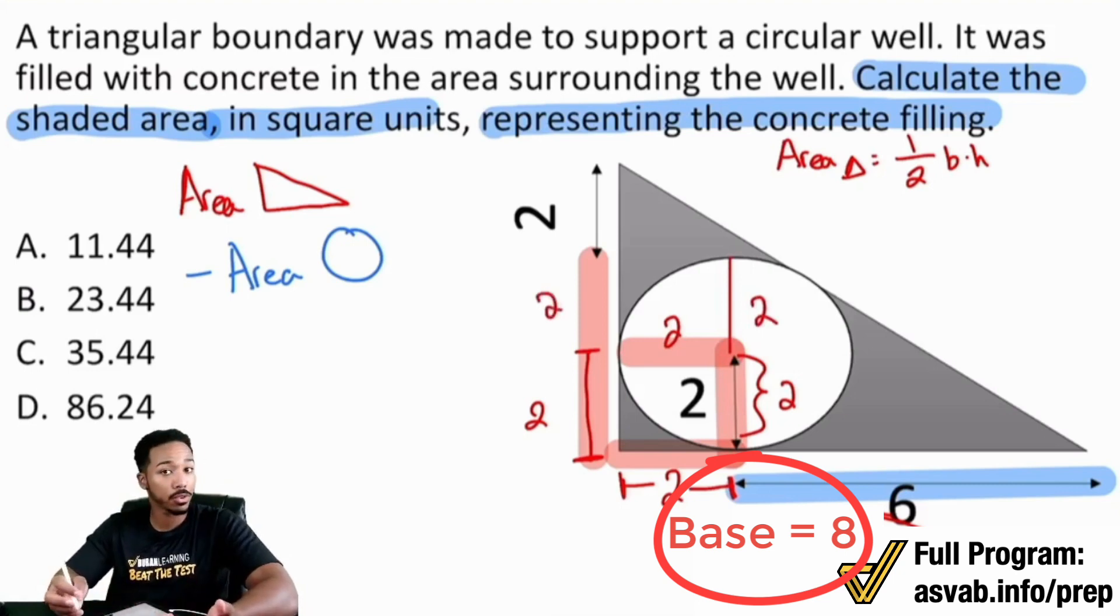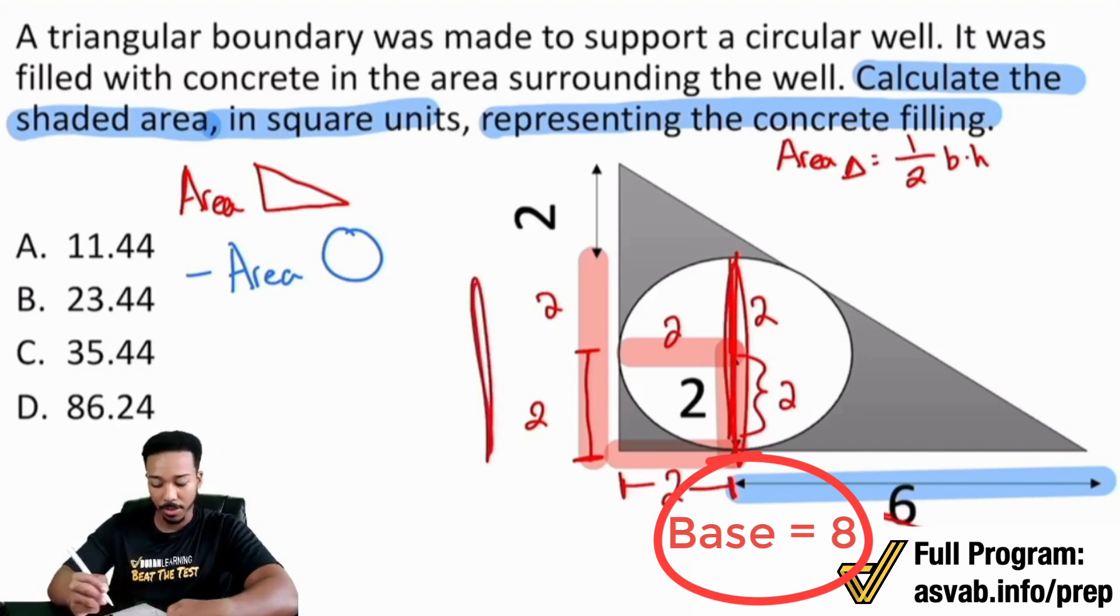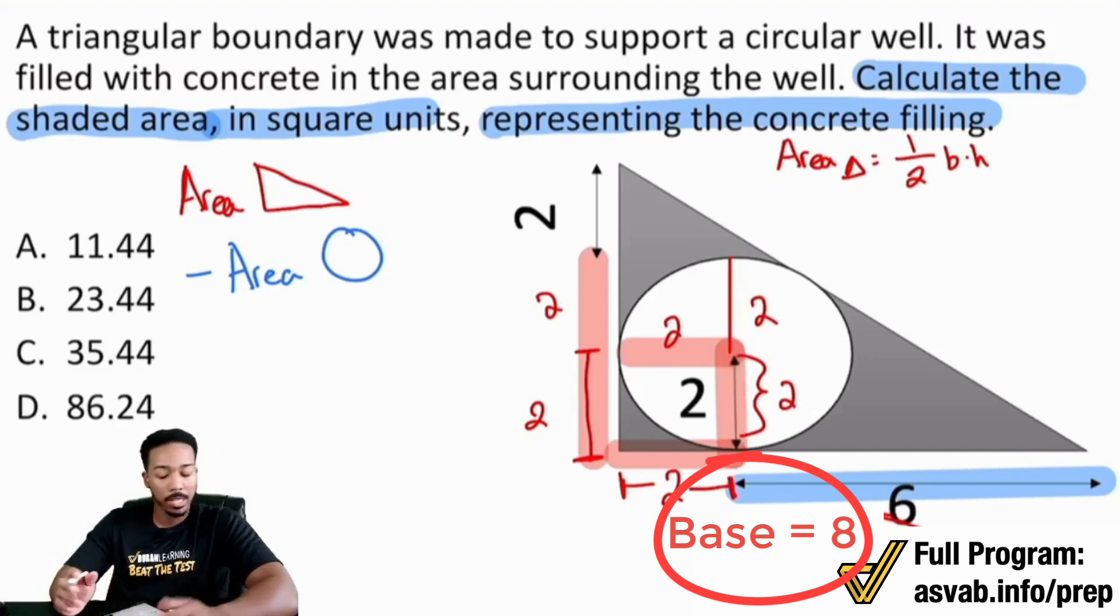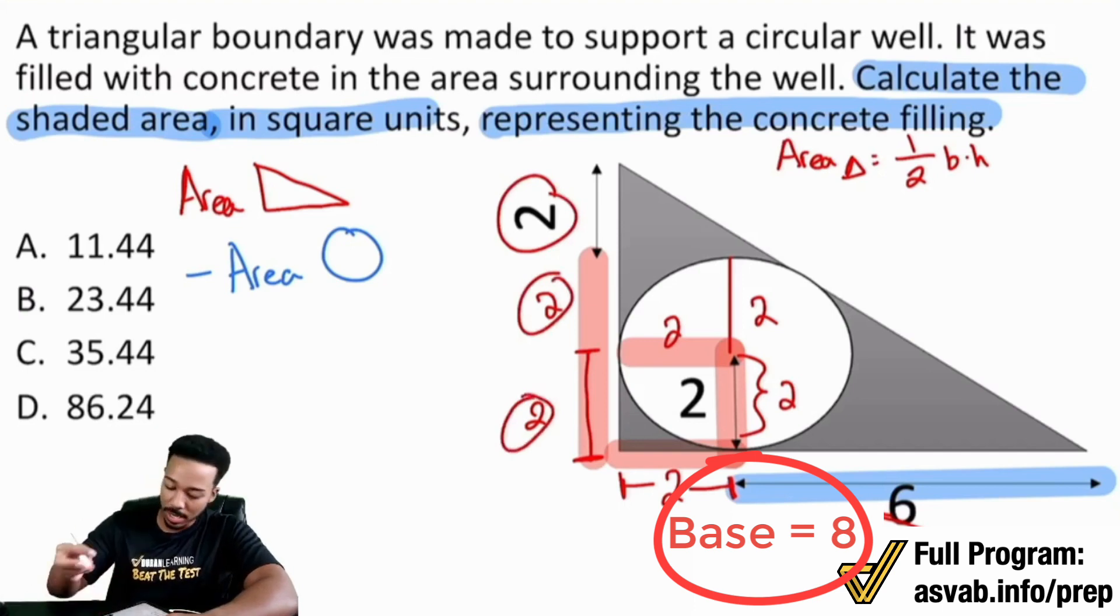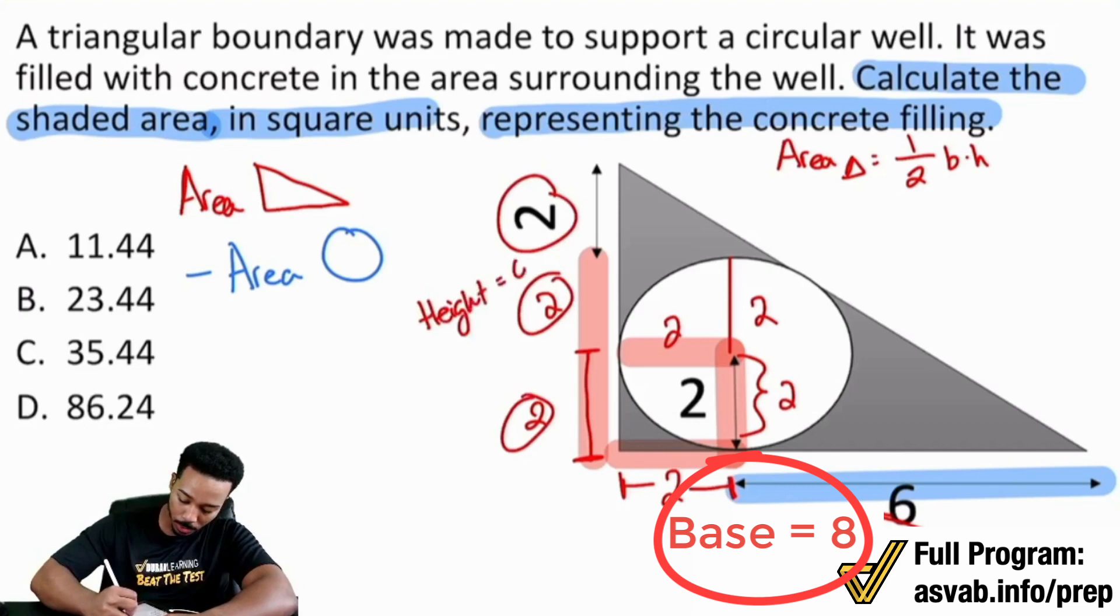And so that's going to be two as well. And this is also the diameter of the circle. You can see that the whole thing is going to be four. And again, that will be four together. But nonetheless, we have two, two, and two, which makes a total of six. So that means that my height for my triangle equals six.